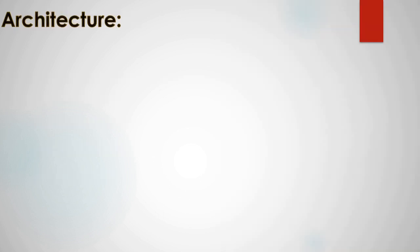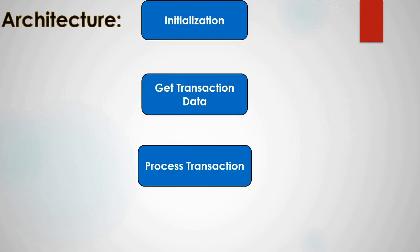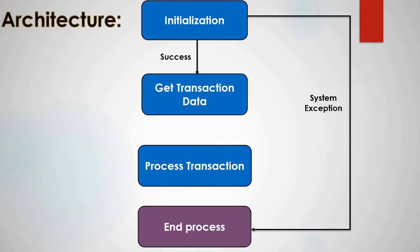The architecture of REFramework is a combination of states: Initialization, Get Transaction Data, Process Transaction, and the final state — End Process. In the Initialization state, config data is read and the application is initialized. If successful, the flow moves to Get Transaction Data. But if we get any system exception in initialization, the flow moves to End Process.